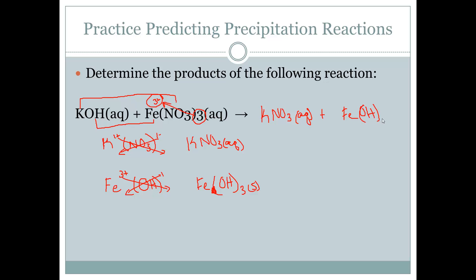From here we need to balance. We have three hydroxides on the right side, so we need to multiply the potassium hydroxide by three. That changes our potassium to three, so we change that coefficient. That gives us three nitrates on the left, and we have three nitrates on the right — so we're balanced.